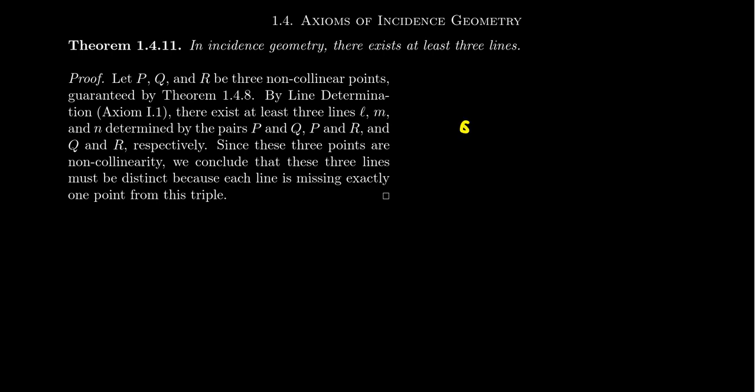So by theorem 1.48 from the previous lecture, which told us that there exists a set of three non-collinear points, we have three points, call them P, Q and R. And then using these three points, which we know are non-collinear, line determination says there's a unique line between P and Q, there's a unique line between P and R, and there's a unique line between R and Q.